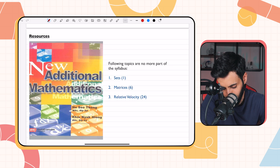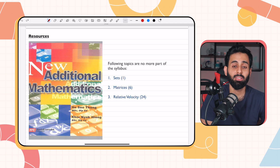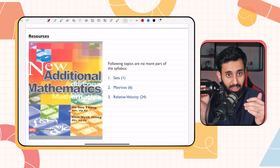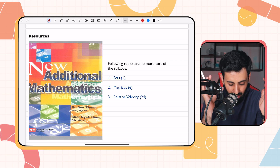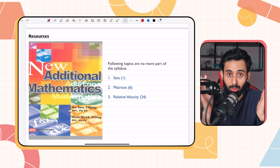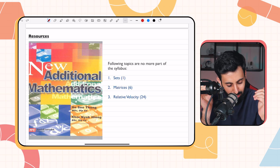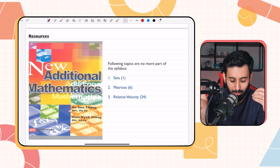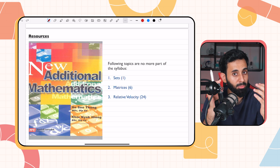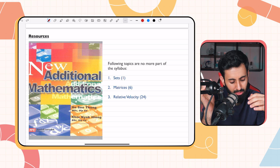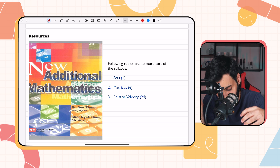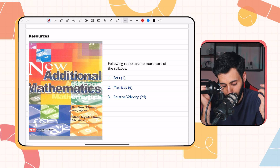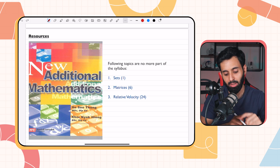Now let's talk about resources. You should get your hands on the new resources, but the old ones are not completely irrelevant. This old book — the real OG of AdMath books — has been around for as long as I can remember. If you have it, don't throw it away. It's very relevant, but watch out for topics that are no longer part of the syllabus: sets (chapter one), matrices, and relative velocity (chapter 24).